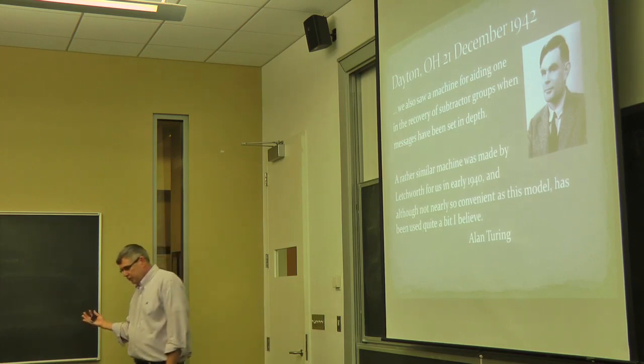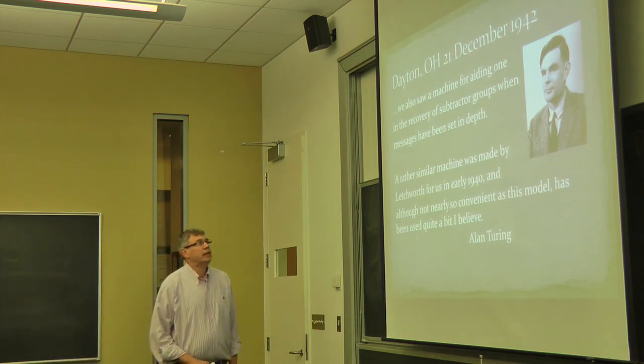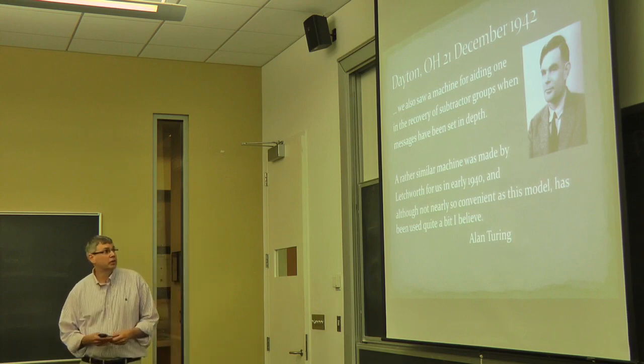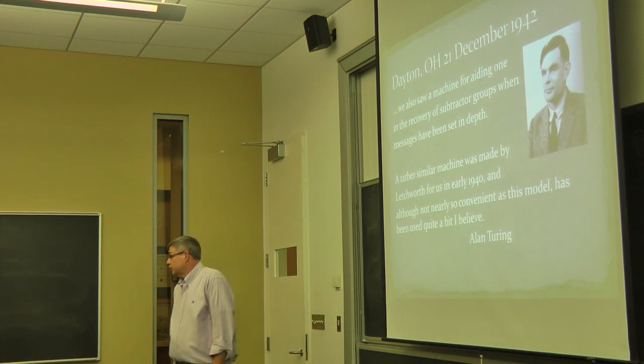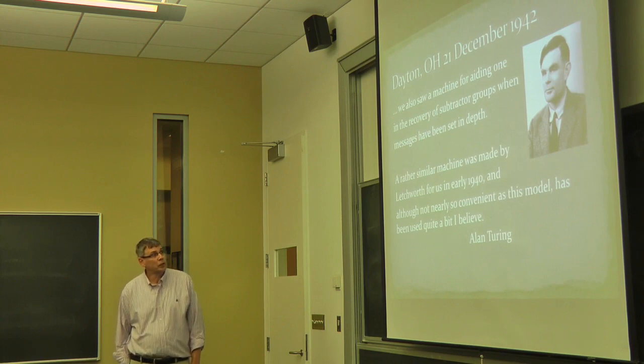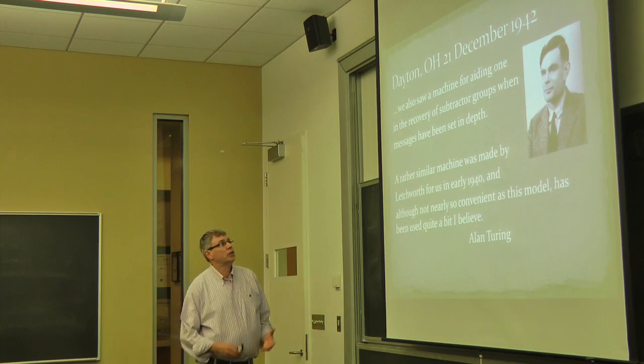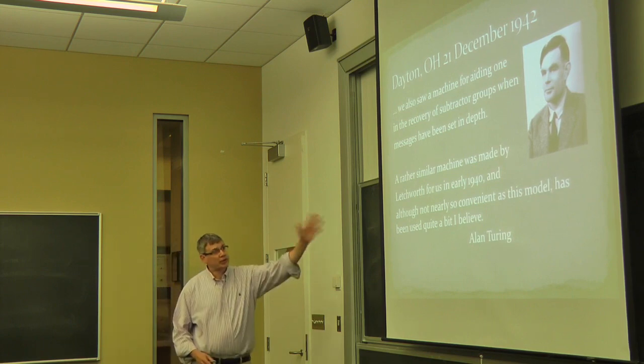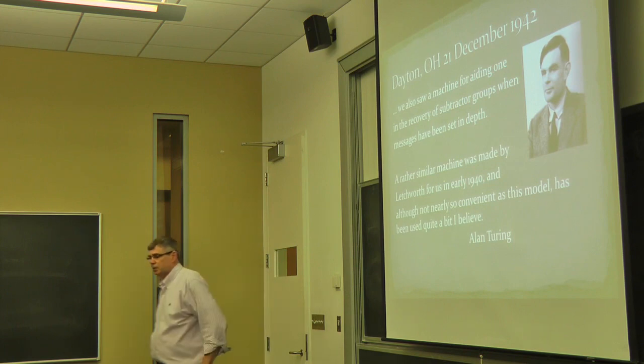My part of the story is, Northern Kentucky University is really in Cincinnati. We're across the river from downtown. North of us is Dayton, Ohio. And Dayton, Ohio is where the Naval Computing Machine Laboratory was during World War II. They built the machines that broke the Japanese and German ciphers. In late 42, Alan Turing, the famous British mathematician, founder of computer science, and code breaker at Bletchley Park visited the United States and was touring facilities. He went to Dayton. And as he was walking through the lab, he noticed this machine. He said, it's a machine for aiding in the recovery of subtractor groups. They were thinking of them as subtractoring rather than addition.